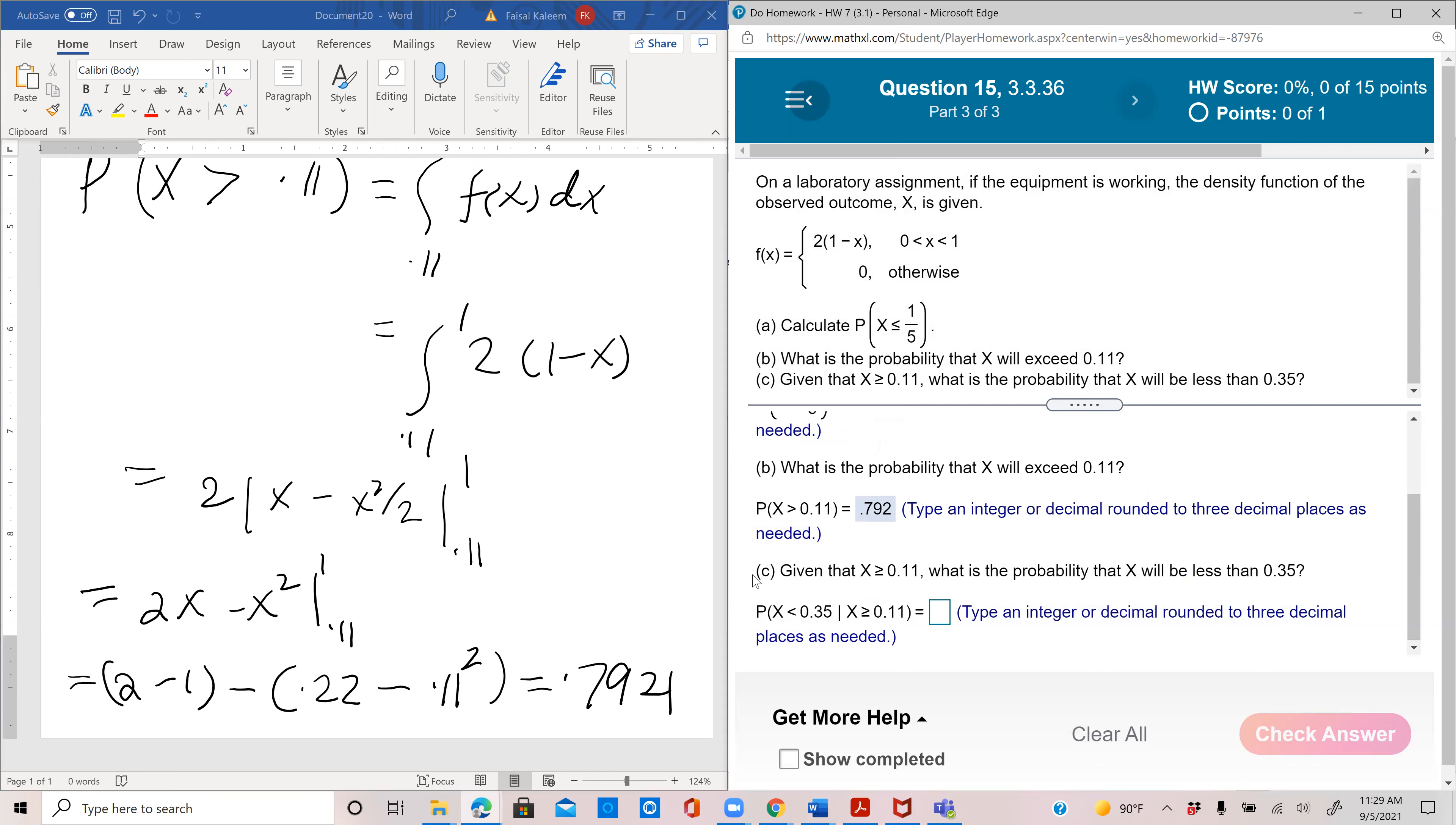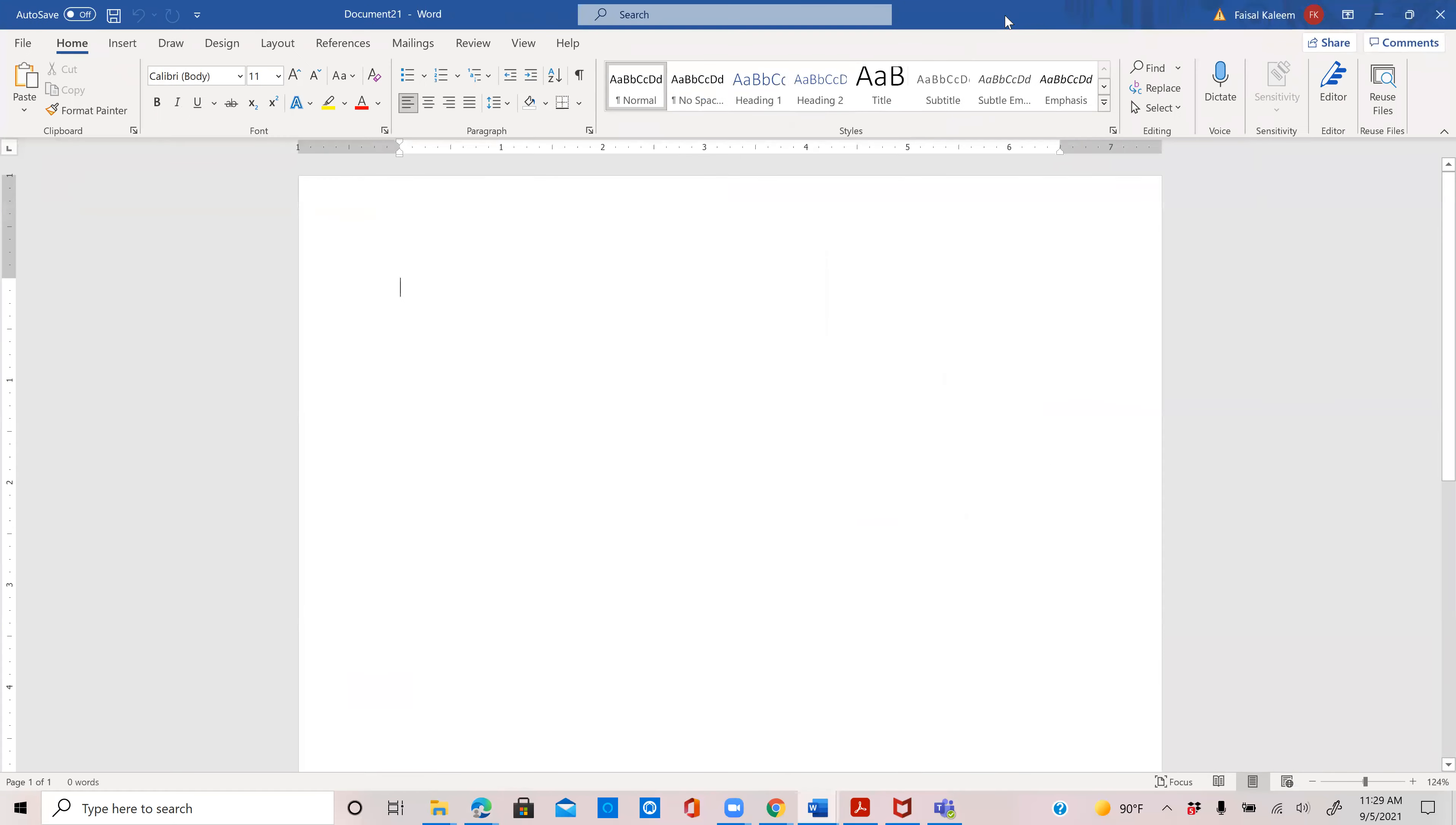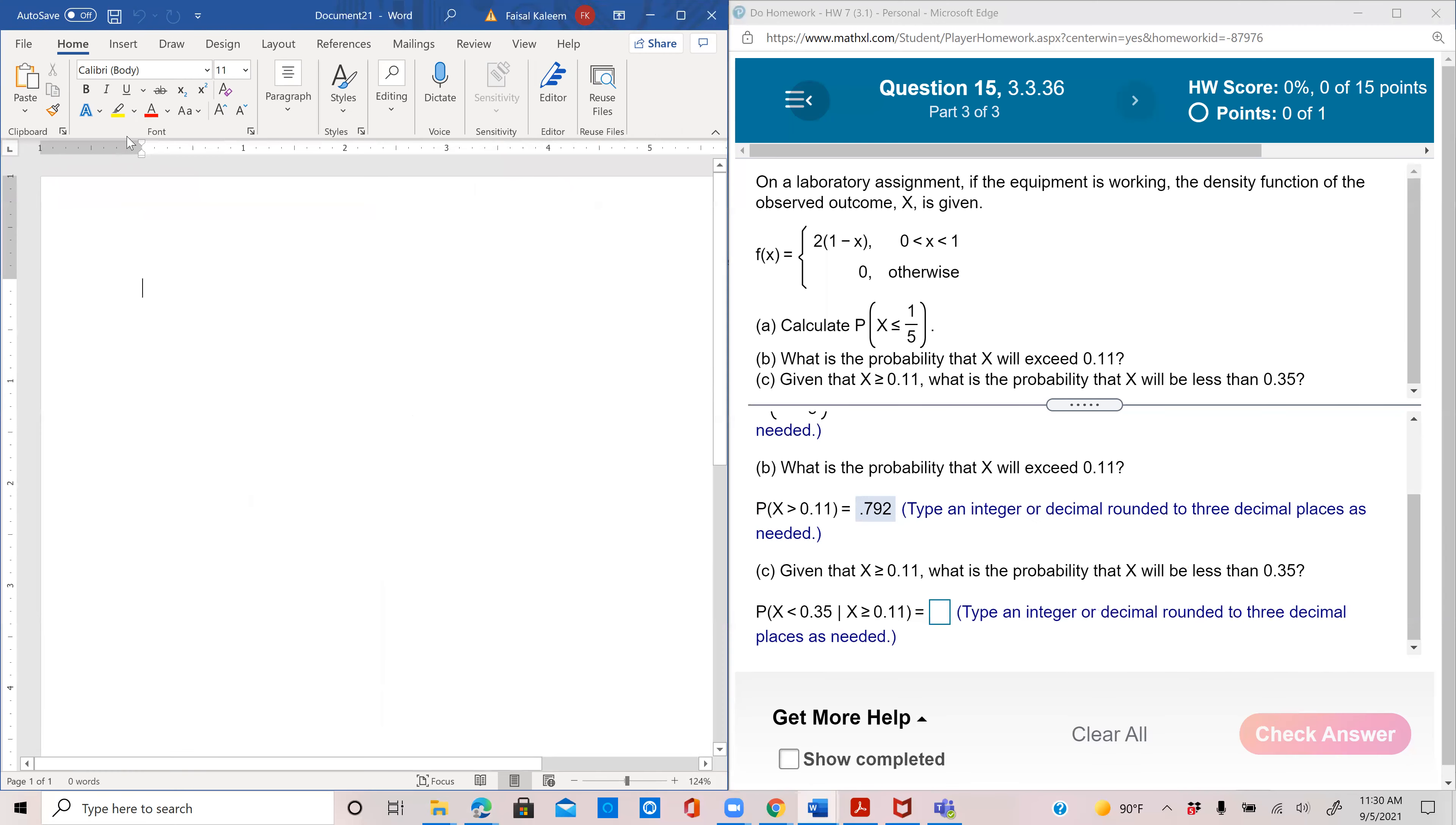Okay, now this is something new, part C. Now we have a conditional probability here, so let's just open a new page. Given that x is greater than or equal to 0.11, what's the probability that x will be less than 0.35? So we have to find probability x less than 0.35 given x is greater than or equal to 0.11.